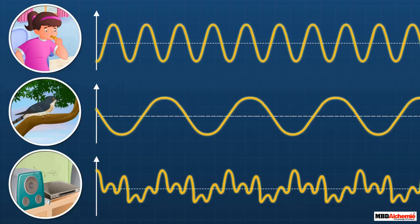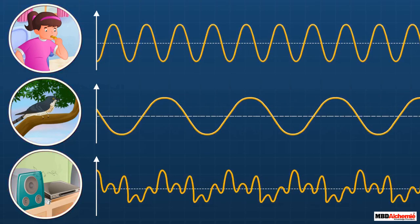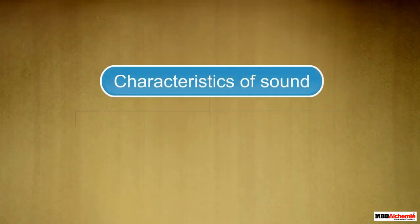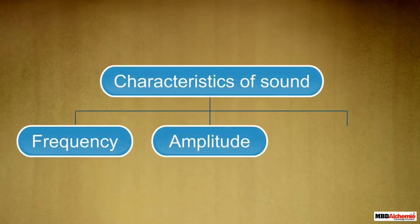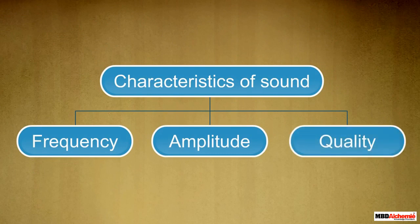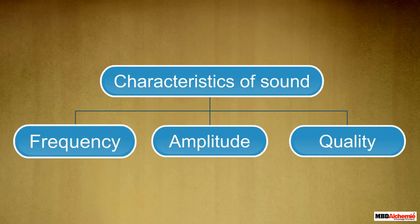Each wave has certain characteristics that make the sounds around us different from each other. These characteristics are frequency, amplitude, and quality. Let us learn about each of these characteristics of sound waves.